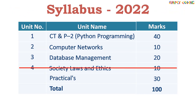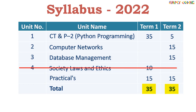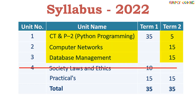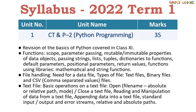This year there is also no Unit 4, and the remaining syllabus is divided into two terms of 35 marks each. The majority of Computational Thinking and Programming goes to Term 1, and a small part of it plus Computer Networks and Database Management goes to Term 2. Now let's see the term-wise syllabus in detail.